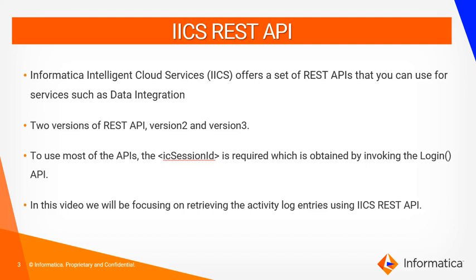Informatica Intelligent Cloud Services offers a set of REST APIs that can be used for services such as data integration. There are a number of REST API resources which can be used depending on the information you are looking to retrieve. There are two different versions of REST API — version 2 and version 3. For retrieving the activity log entries, we will have to use version 2. I would suggest you refer to the REST API connector guide for clarifications on the formatting.